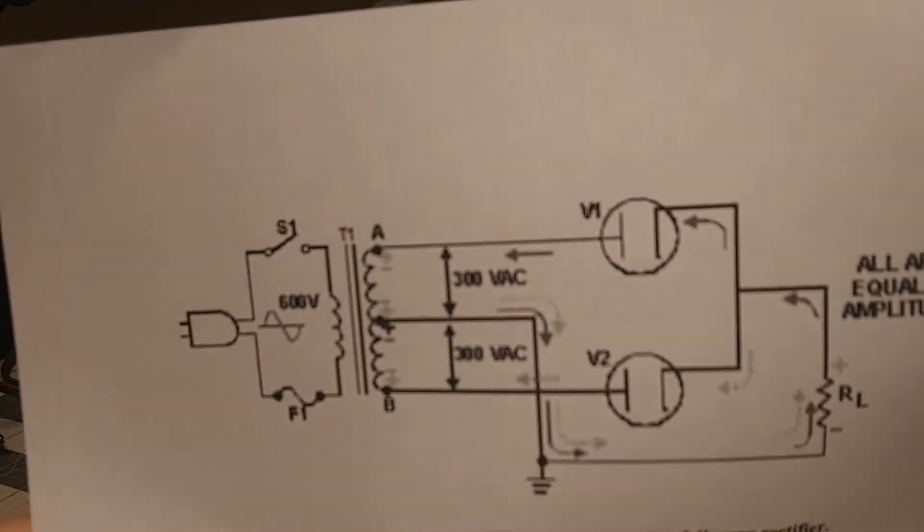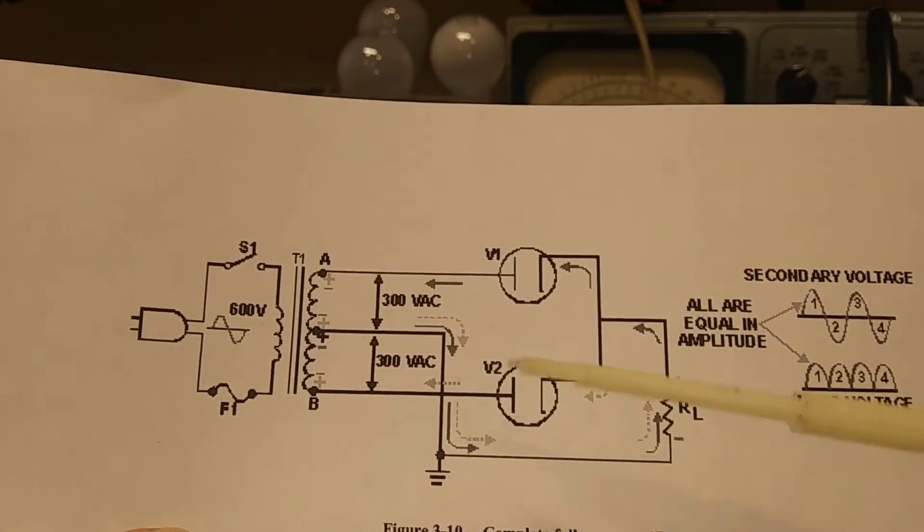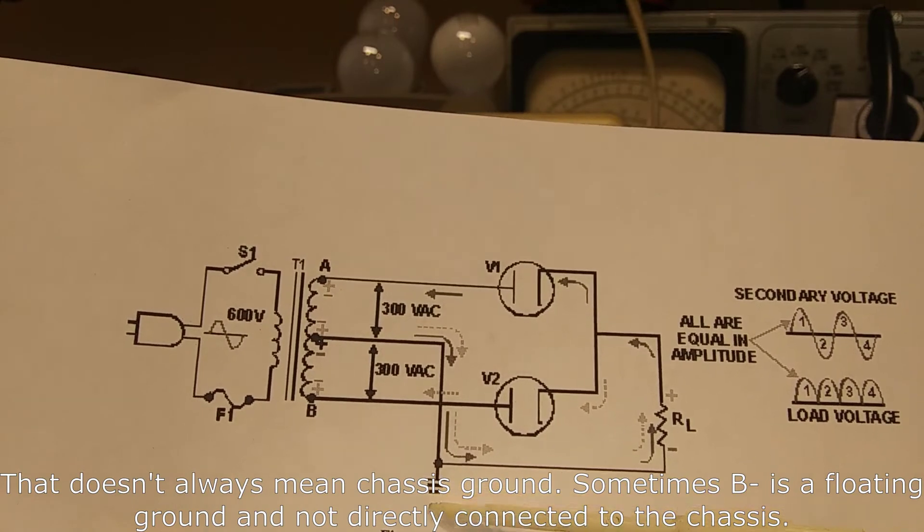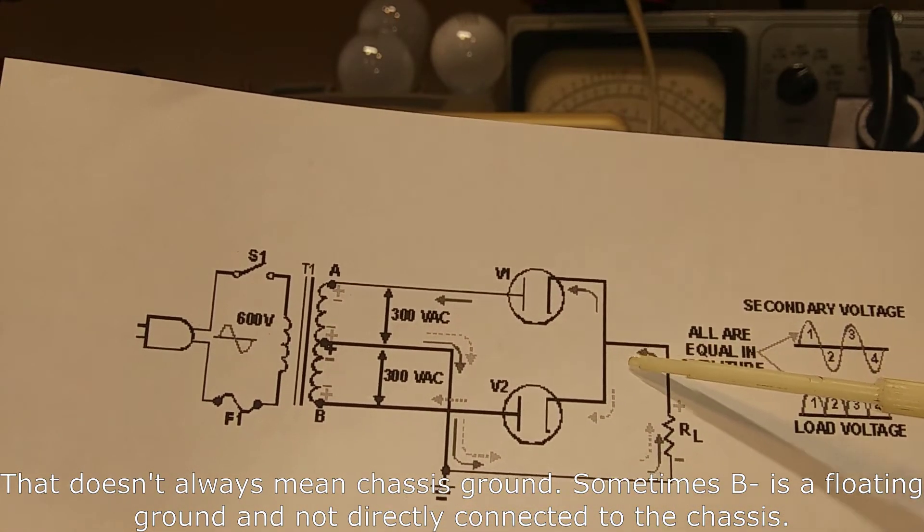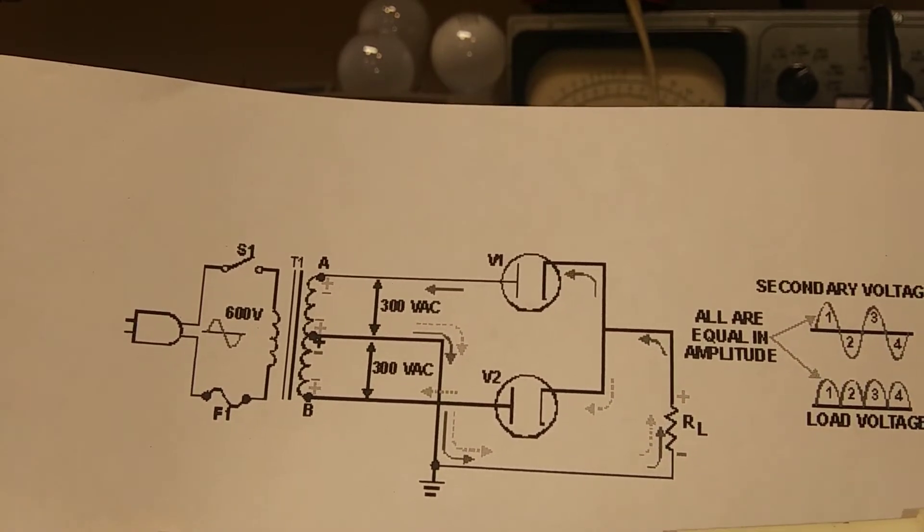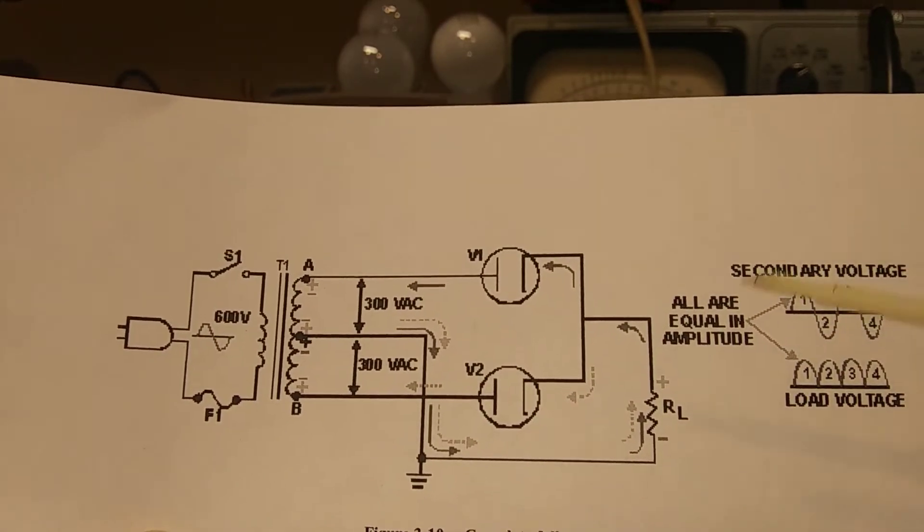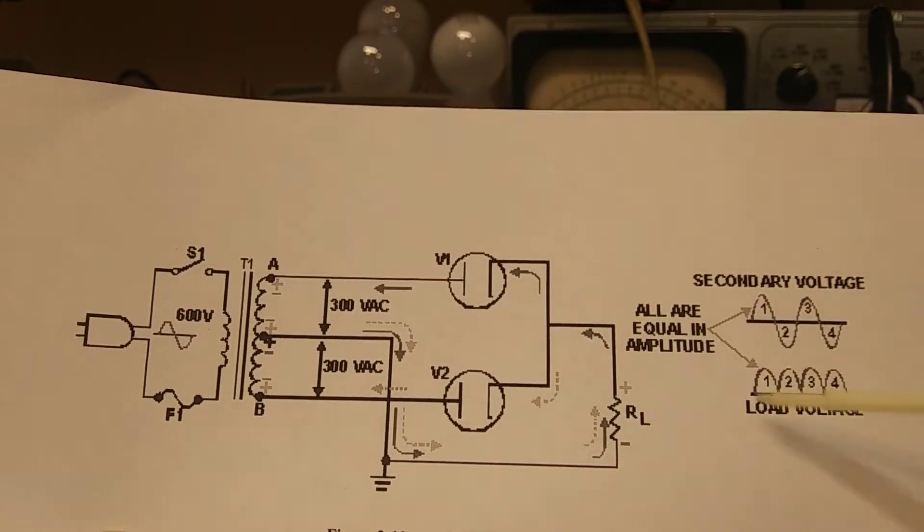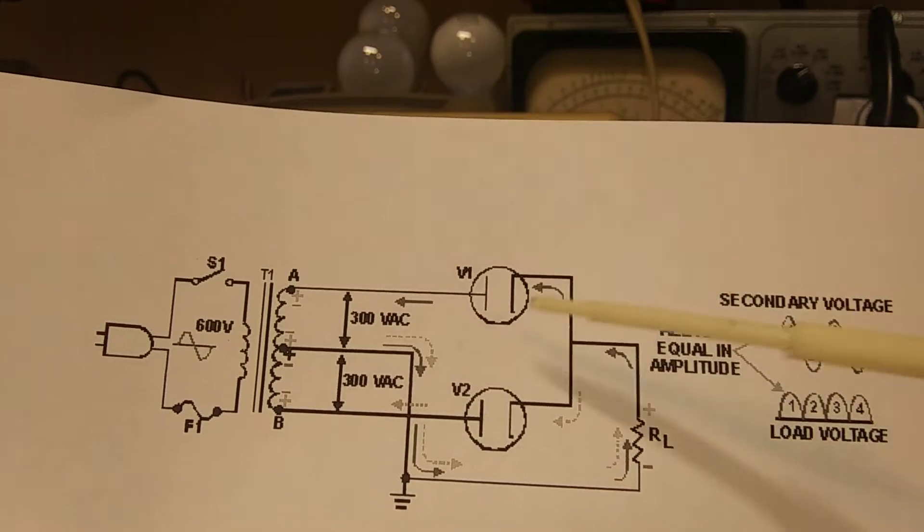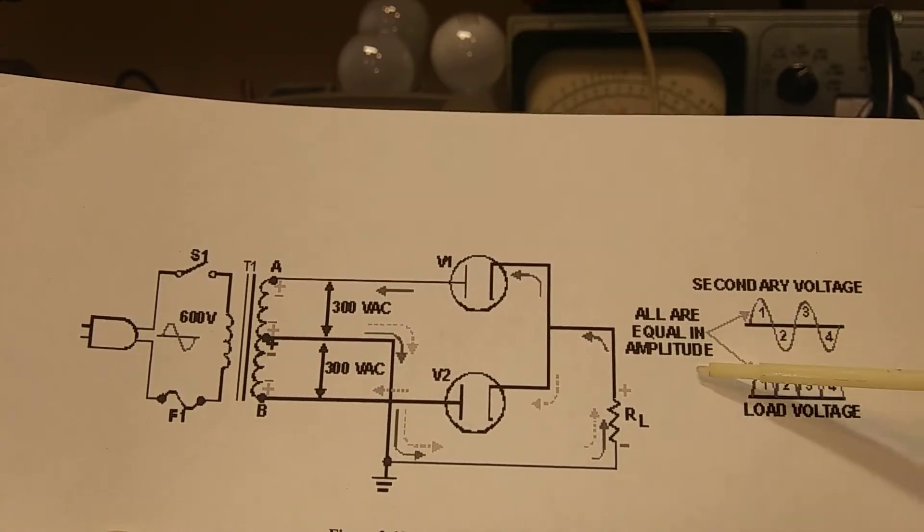Now this is the same basic idea. And they've drawn it with the center tap going to ground, which it should. This would be your B minus. This would be B plus. This would be your B plus. And they're showing two separate arrows. The dark arrow is one side of the, or one phase, and the dotted arrow is the other phase. And the end result is you wind up with this coming out of here. That's what this is. Load voltage. This is what you would see if you put an oscilloscope across this load. This part is what you would see here and here. And you'd see that everything is the same amplitude here and here.